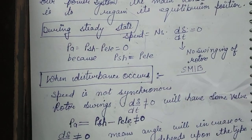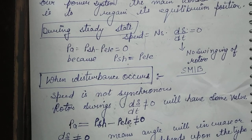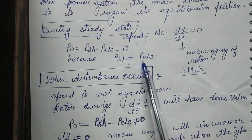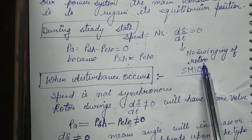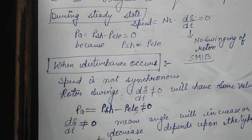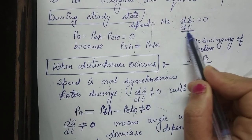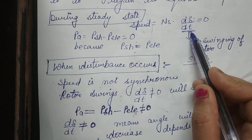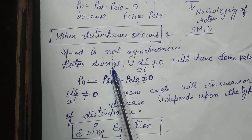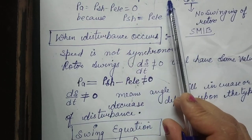We are considering a generator connected to an infinite bus bar or some load. When electrical power equals mechanical power input and there is no swinging in the rotor, the system is in steady state — in equilibrium position. There is no change in rotor angle. But whenever a disturbance occurs, the speed will no longer be synchronous.